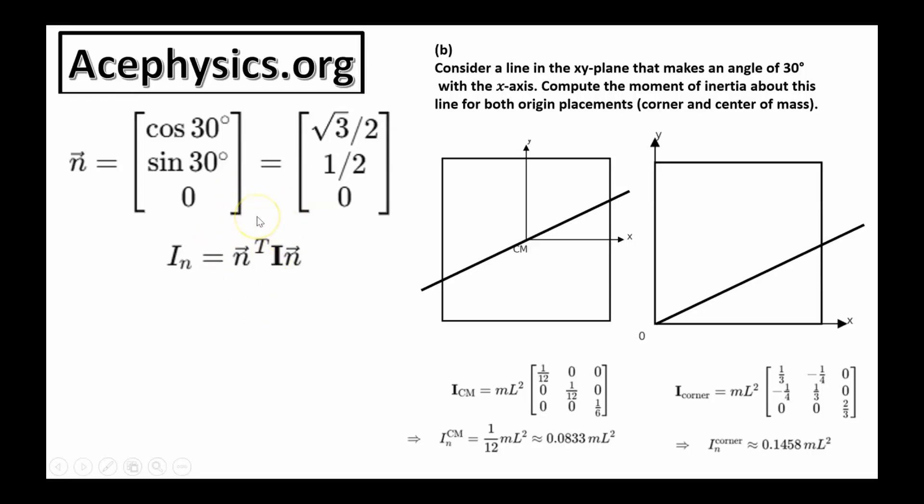Then we take the inner product with the same unit vector which tells us how much of the angular momentum actually lines up with that axis. We do this simple calculation for the i-center of mass matrix and the i-corner matrix and we find these two values are the moment of inertia. The axis going through the corner has a larger moment of inertia and that's reasonable because the mass is more spread out from this axis than it is from this axis.